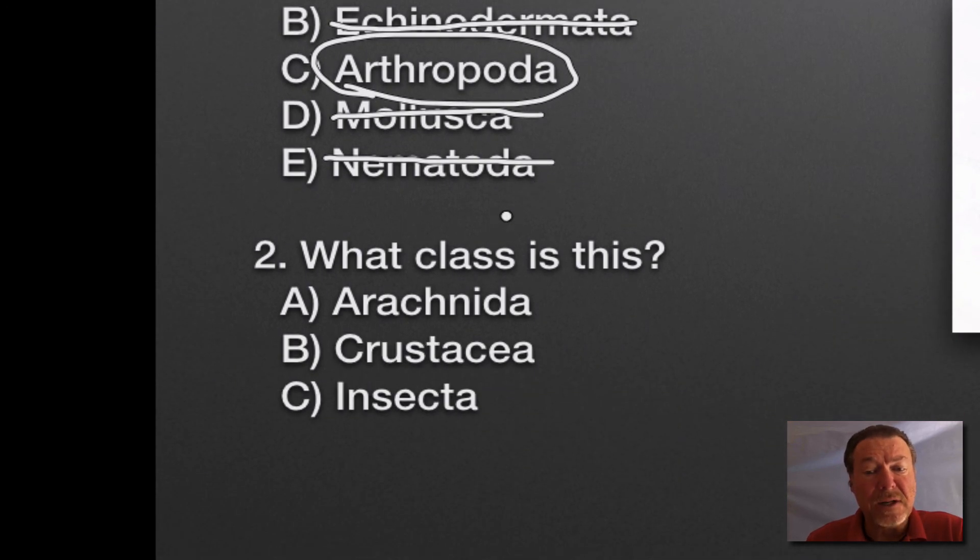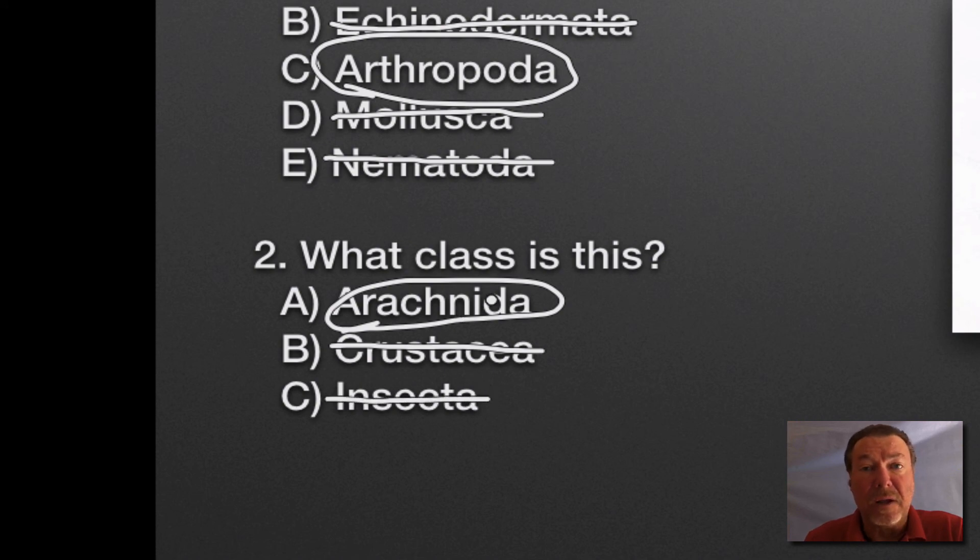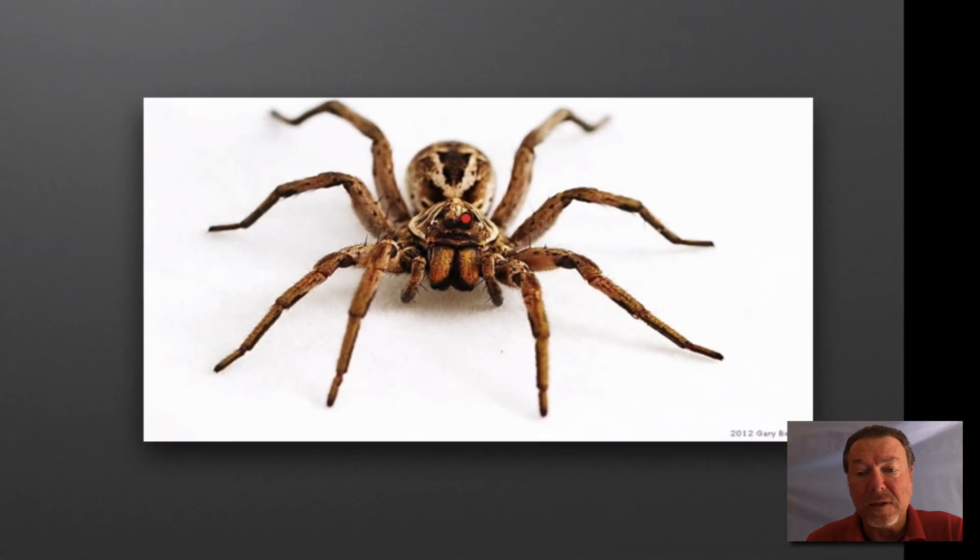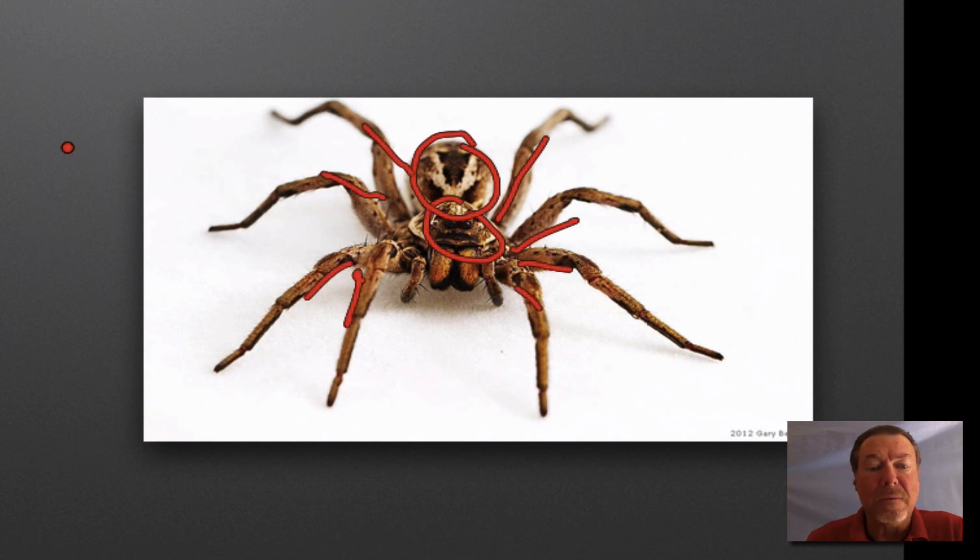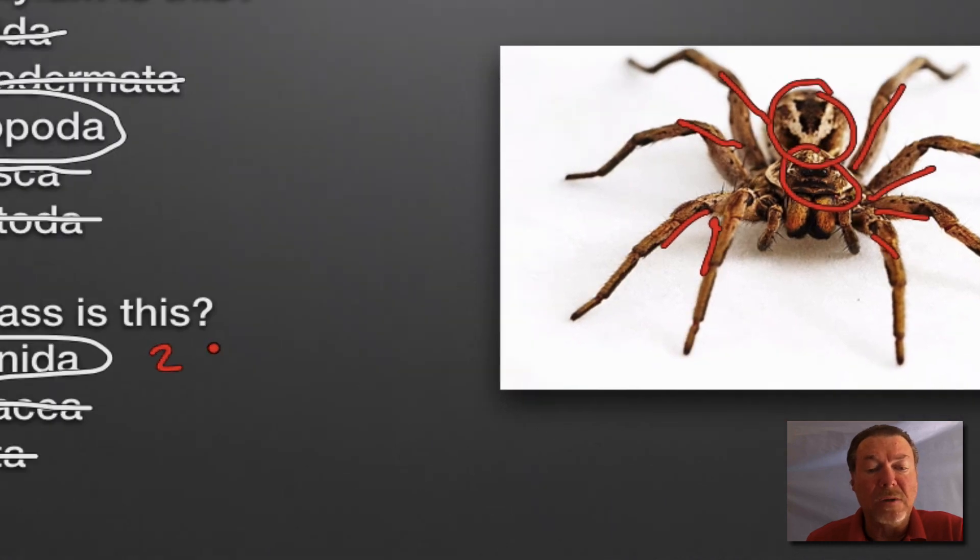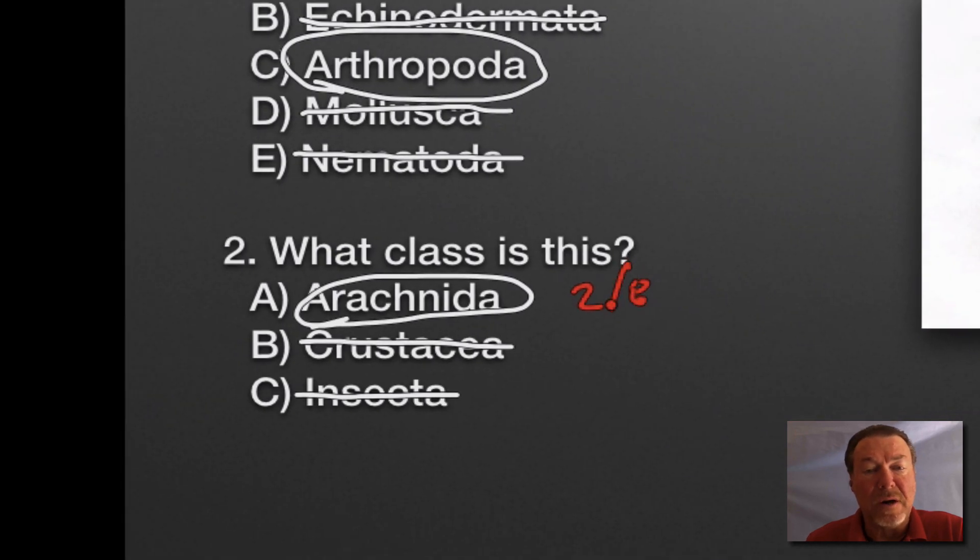What class is this? The answer is A, Arachnida, the spiders. Crustacea is the lobsters, crabs, and shrimp. Insects have three body parts and six legs. The spider, an arachnid, has two body parts - a head-cephalothorax - and eight legs: one, two, three, four, five, six, seven, eight. So all arachnids have a body plan of two and eight: two body parts, eight legs.